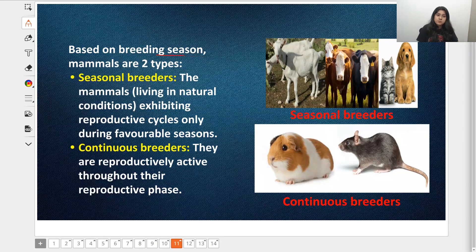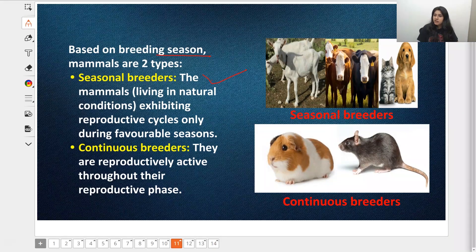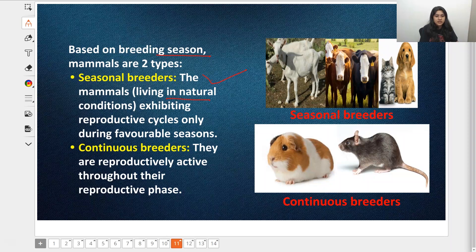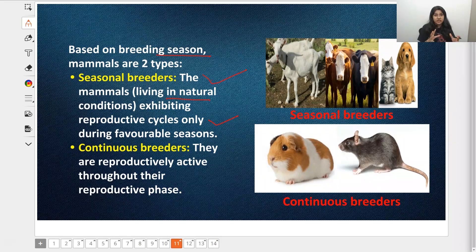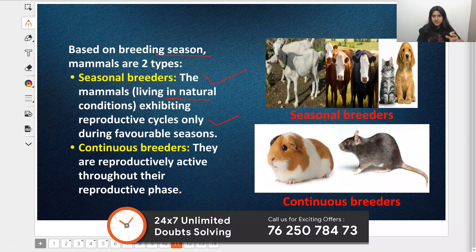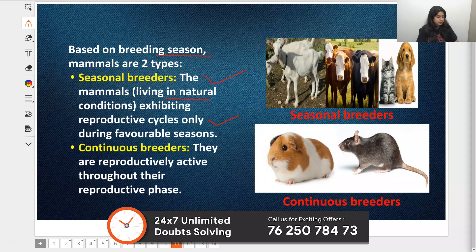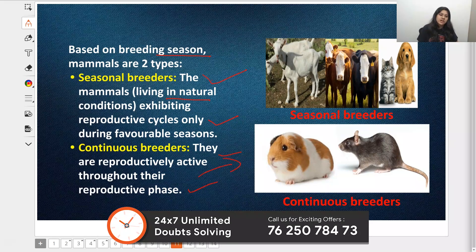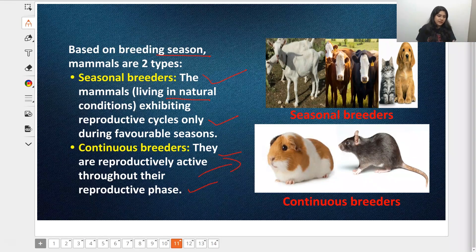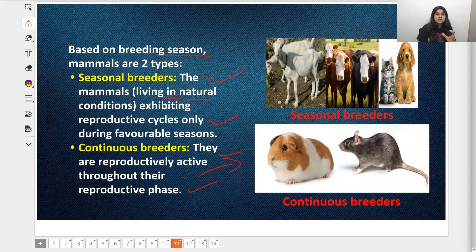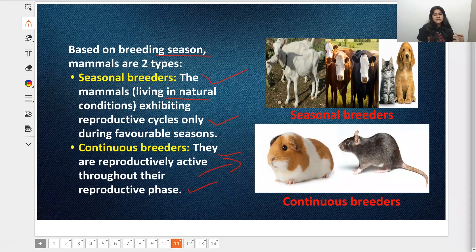In this chapter, there are two breeding seasons. There are seasonal breeders - we have cows, cats, dogs, and goats. These live in natural conditions and exhibit reproductive cycles based on environmental conditions. You must have seen dogs have their babies in late winter. Various other animals also. Then there are continuous breeders - that's us, humans, and also guinea pigs and rats which produce throughout their season. There's no stopping. They're called continuous breeders.